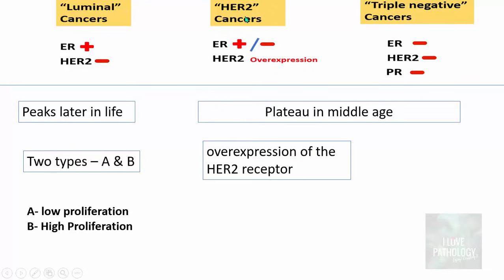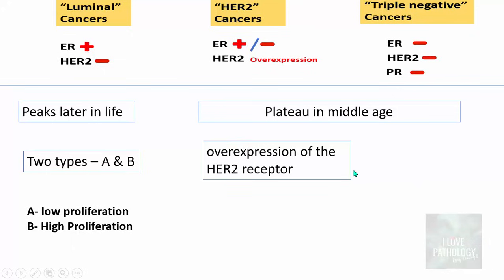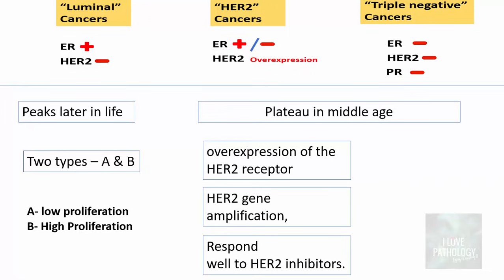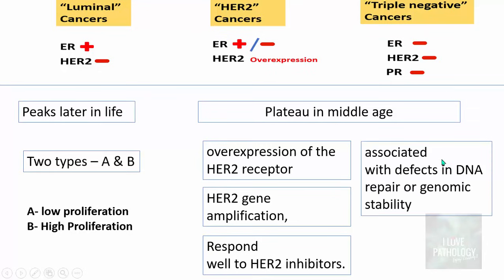HER2 cancers arise due to overexpression of the HER2 receptor, which is caused by HER2 gene amplification. Importantly, HER2 cancers respond very well to HER2 inhibitors. Triple-negative breast cancers are often associated with defects in DNA repair or genomic instability.